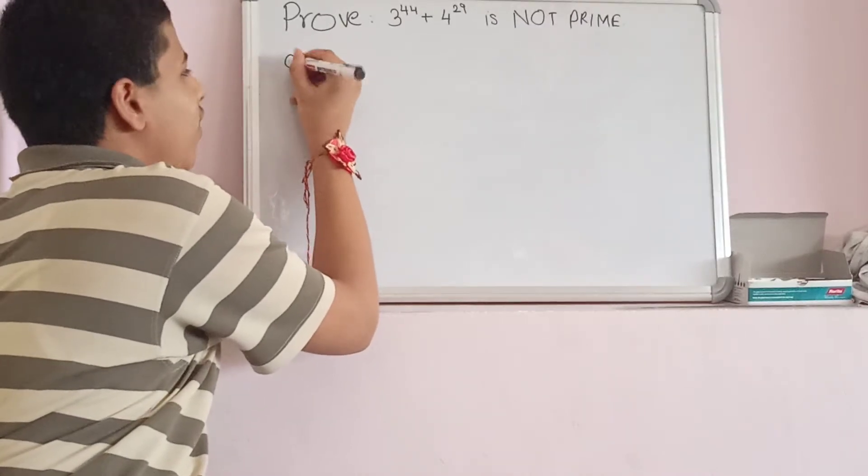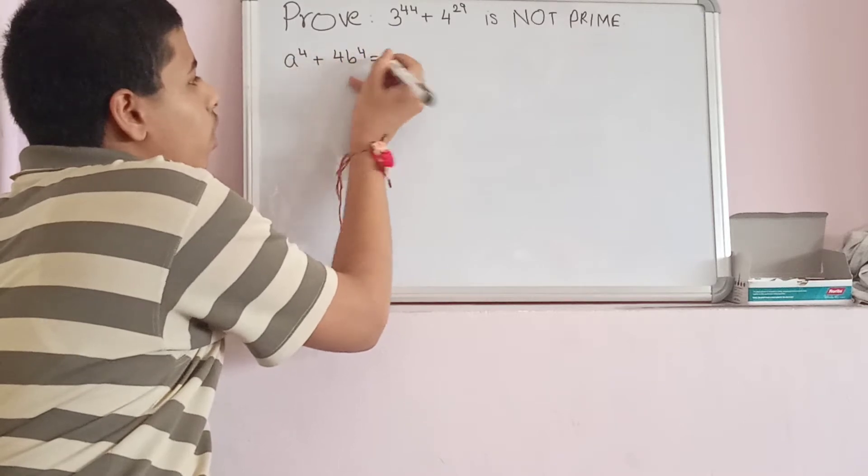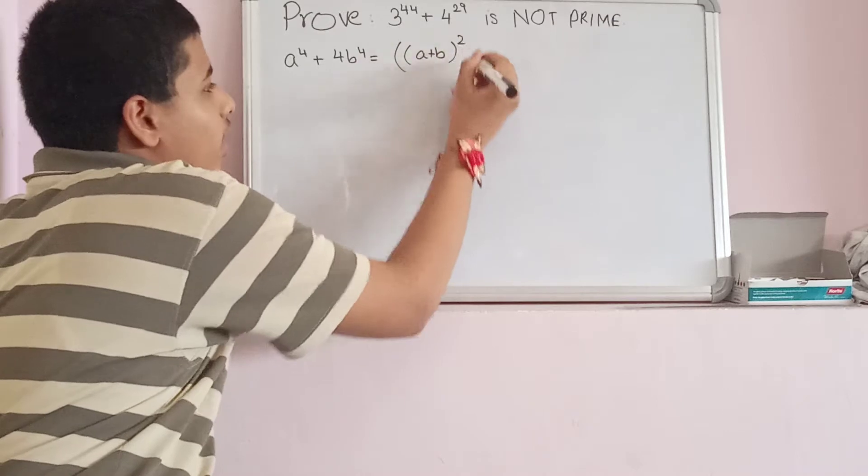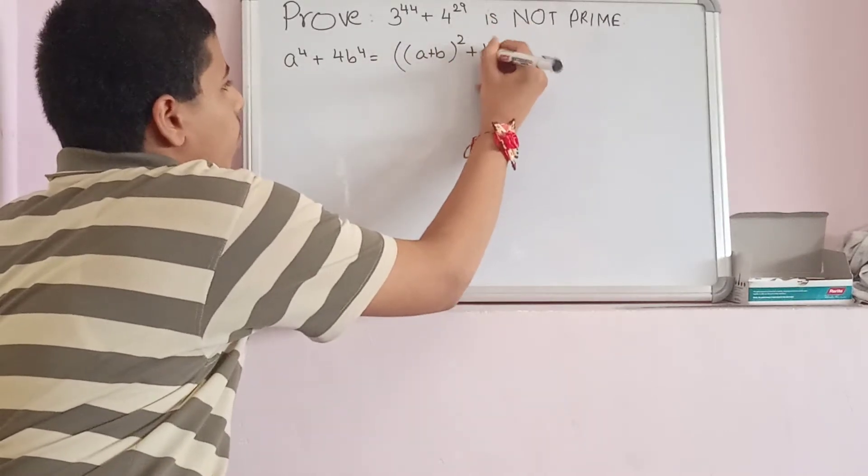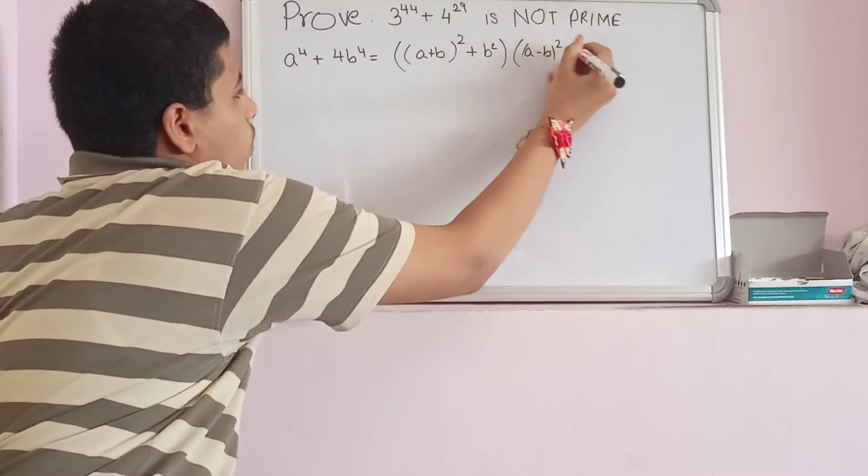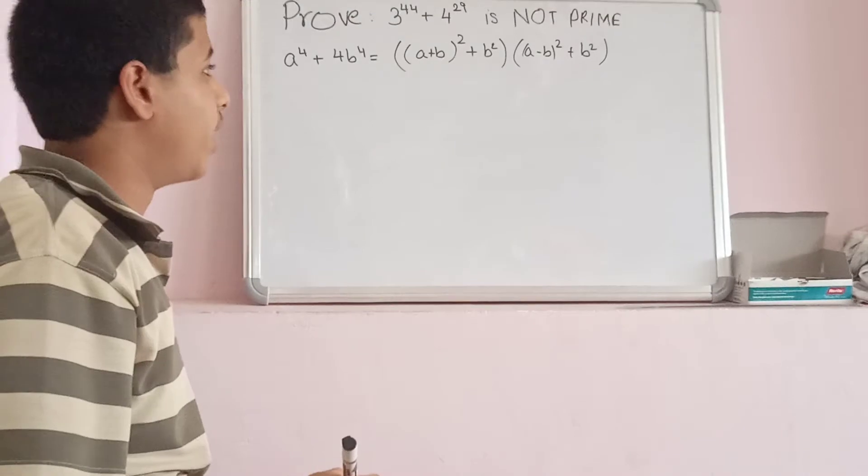So that says that if we have an expression like that, we can calculate it as a^4 + 4b^4 equals (a^2 + 2b^2 + 2b^2) multiplied by (a^2 - 2ab + 2b^2). That's the Sophie Germain identity.